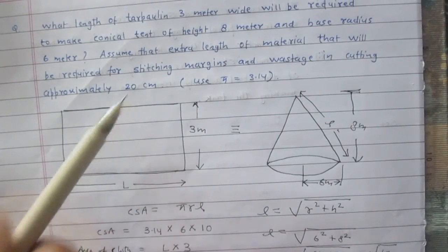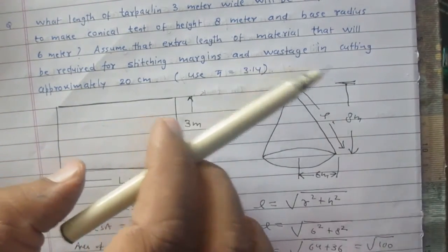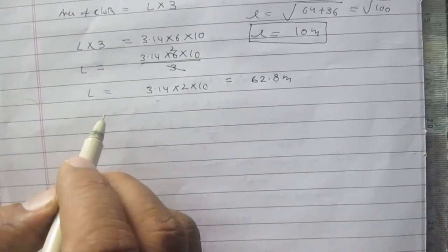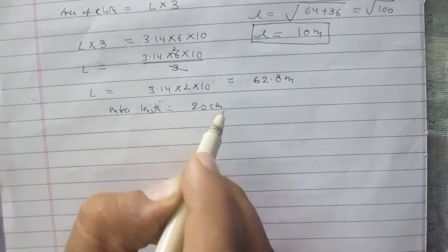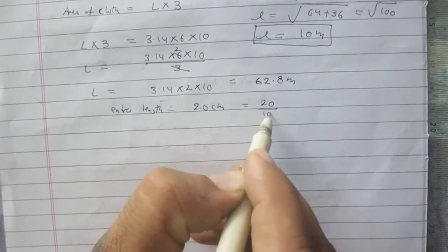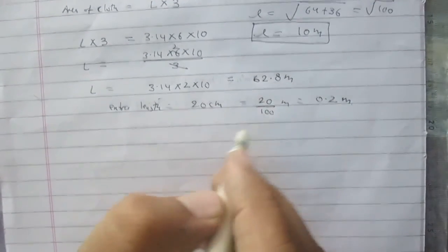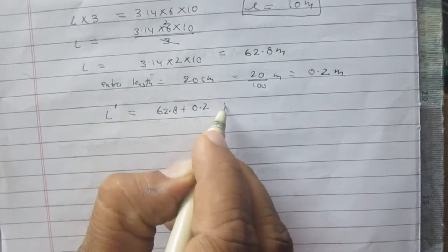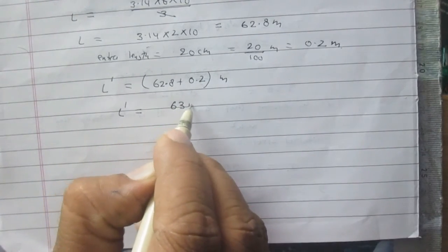But 62.8 meters is not enough. We are also given that 20 cm of extra length is required for stitching margins and wastage in cutting. So we add 20 cm, which is 20/100 = 0.2 meters, to this length. The total length will be 62.8 + 0.2 = 63 meters. Therefore, the total length of the tarpaulin cloth required is 63 meters.